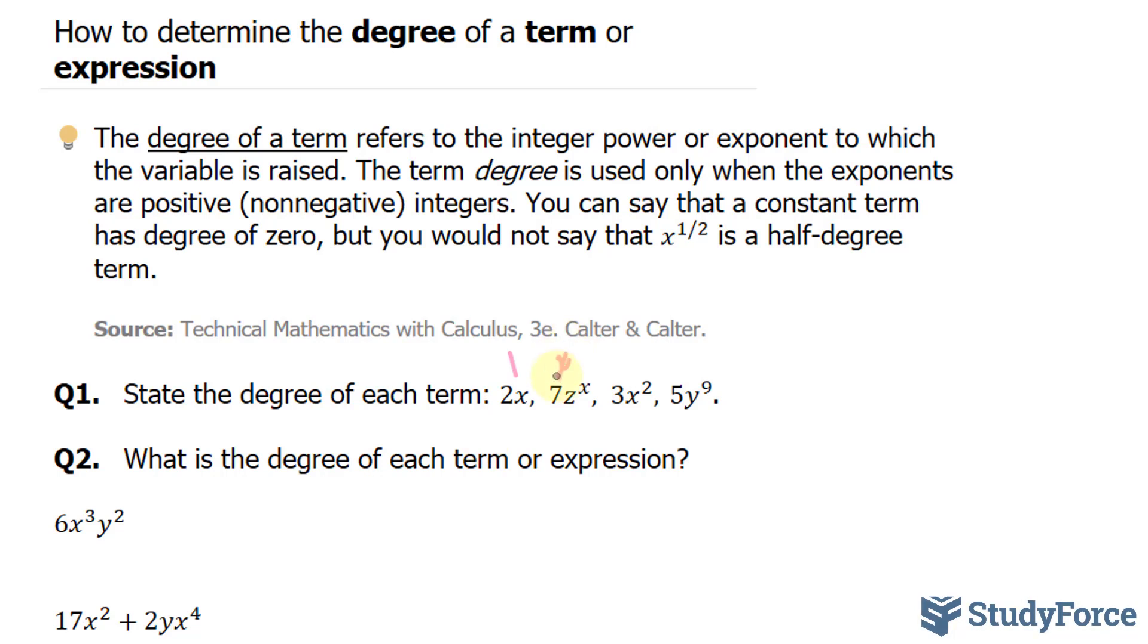Next, we have 3 times x to the power of 2. The degree of this term is 2. And finally, 5 times y to the power of 9. This has a degree of 9.